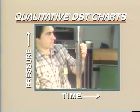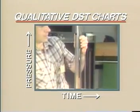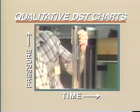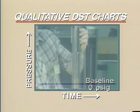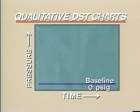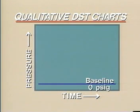Before the test assembly is run into the hole, the tester loads the chart into the recorder and draws the baseline on the chart using the recorder stylus. This represents zero PSIG for the mechanical pressure gauge. The clock is then started, the tool assembled and started in the hole.